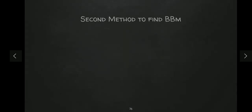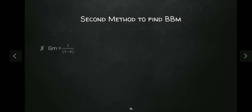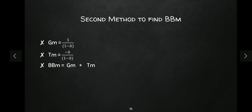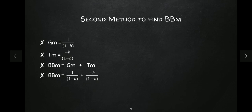Now there is one more very simple method to find out the value of the balanced budget multiplier. The government expenditure multiplier value is 1/(1 - b), as calculated in the previous video. Since the balanced budget means both government expenditure and tax are changing, the balanced budget multiplier is the sum of government multiplier plus tax multiplier. Adding them: 1/(1 - b) + (-b)/(1 - b) gives us (1 - b)/(1 - b), which cancels to give a value of one again.